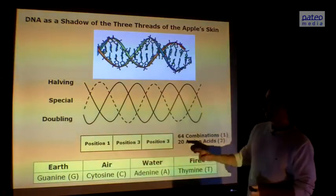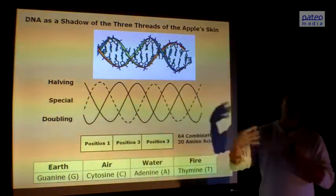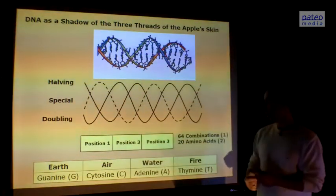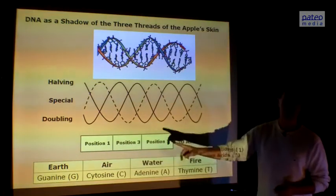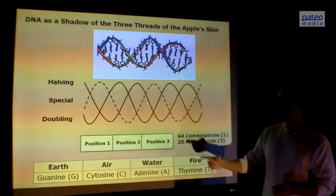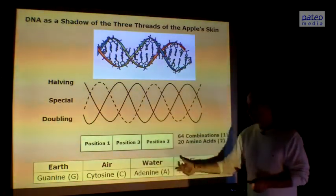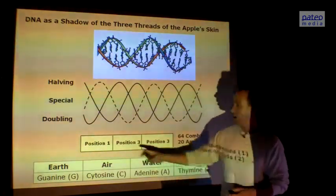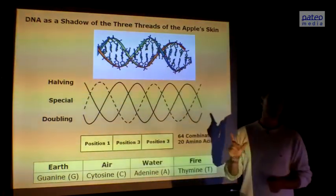If you now look at the DNA, the way they are connected, there are four different types of bases, base connections: guanine, cytosine, adenine, and thymine. They also correspond each to a different energy, to a different spiraling phase—earth, air, water, or fire. And these four different connections, they are each at a position. Three positions in a row is a genetic unit.